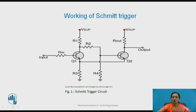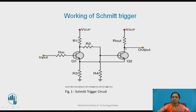As Q2 turns on, it goes to the saturation level and acts as a short circuit. The output voltage is therefore reduced — logic 0 is obtained. This is the stable state where Q2 is in saturation and Q1 is in cutoff, giving the logic 0 stable state of the Schmitt trigger. The collector current IC flows through the circuit and through the emitter resistor, confirming logic 0 output.